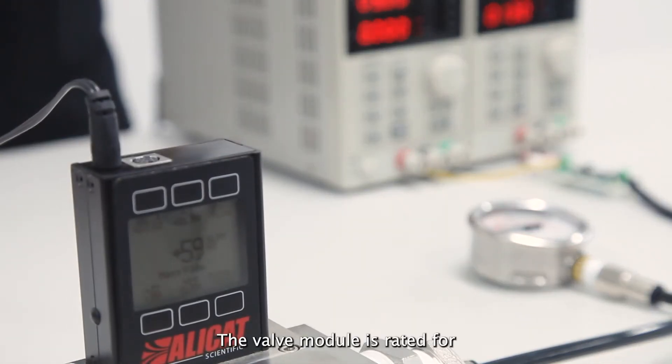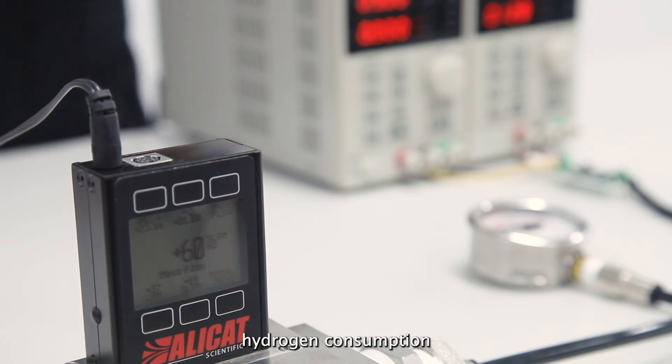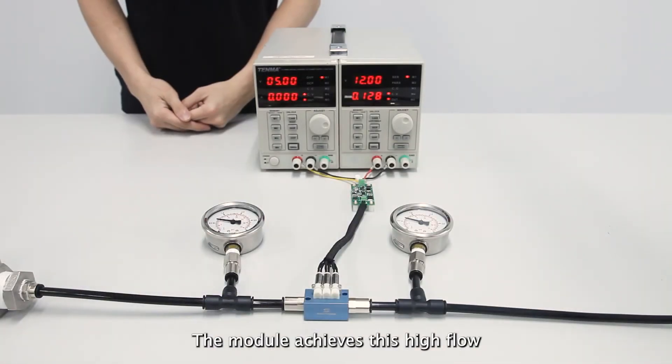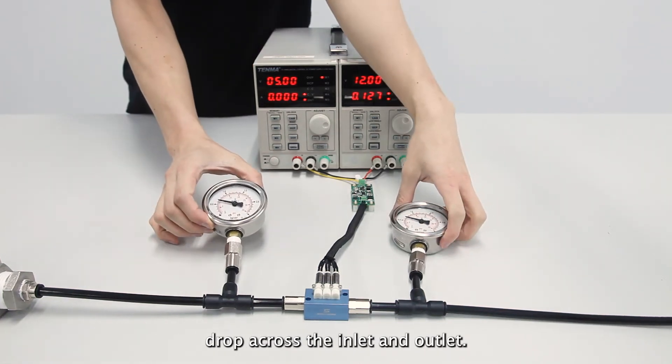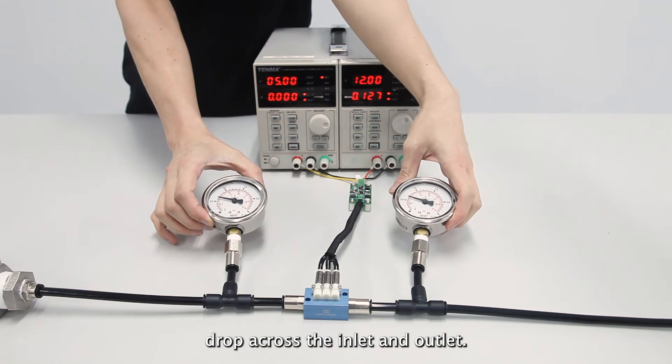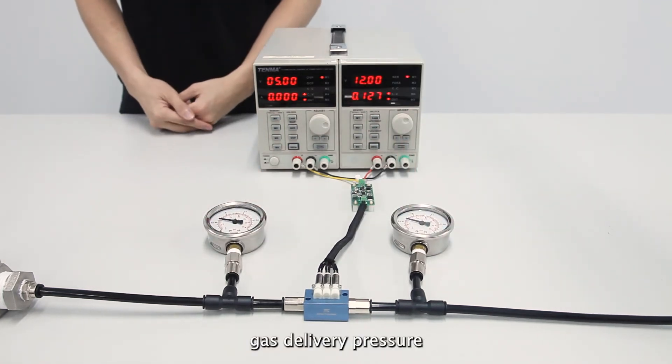The valve module is rated for 55 standard liters per minute of hydrogen gas flow. This means that a single module can support the required hydrogen consumption of a 4 kilowatt fuel cell. The module achieves this high flow rate with almost no pressure drop across the inlet and outlet. This ensures an optimal hydrogen gas delivery pressure to your fuel cell system.